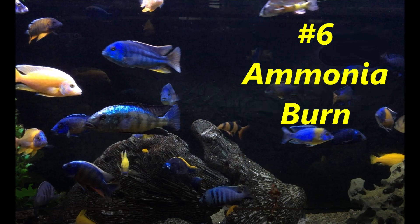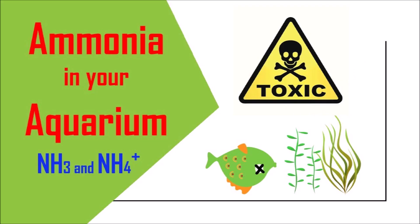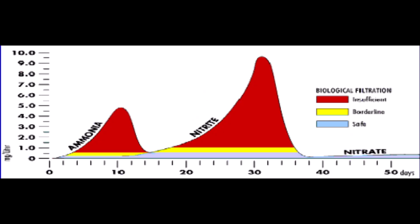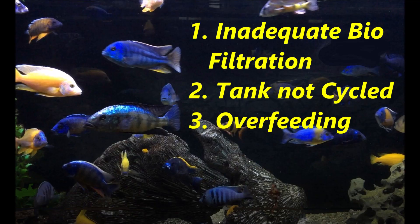Number six on the list is ammonia burn. We're all very aware that ammonia and ammonium in the aquarium is very lethal to our fish, and we're also aware of the importance of the nitrogen cycle in neutralizing that ammonia. Causes of ammonia burn include inadequate biofiltration, the tank not being fully cycled, and overfeeding your fish — all of which can create excess ammonia that will harm your fish.